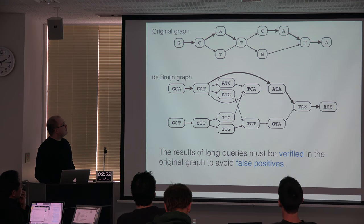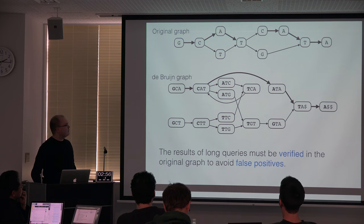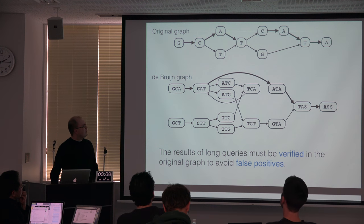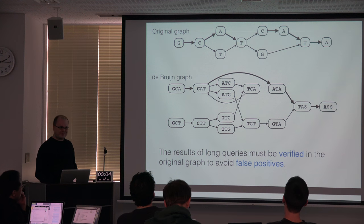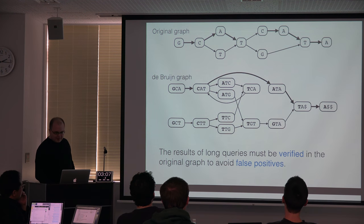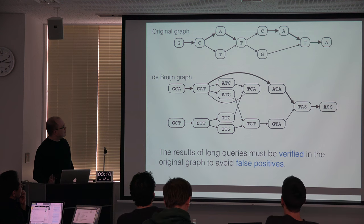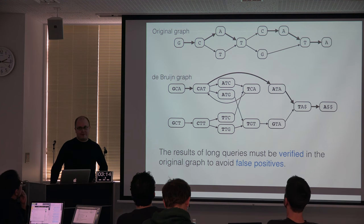This is the basic idea behind GCSA2. Instead of indexing the original graph, we index the de Bruijn graph for the paths in the original graph. The problem is: the larger the k, the larger the de Bruijn graph is, and it grows exponentially with k. So we need some kind of pruning — actually two kinds of pruning.